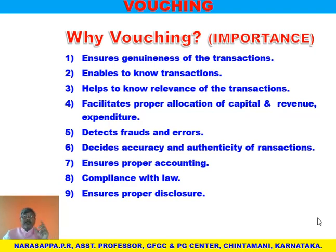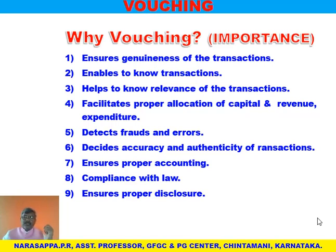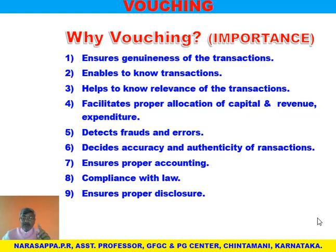Fifth, vouching helps to detect frauds and errors. Errors are unintentional mistakes; frauds are intentional mistakes done by people in the organization for personal benefits — such as showing less income, paying less income tax, cheating the public to attract investments, or window dressing by showing higher profits than real profits. All those frauds and errors can be identified by vouching. Sixth, it decides the accuracy and authenticity of transactions — whether all transactions are known to all responsible people.